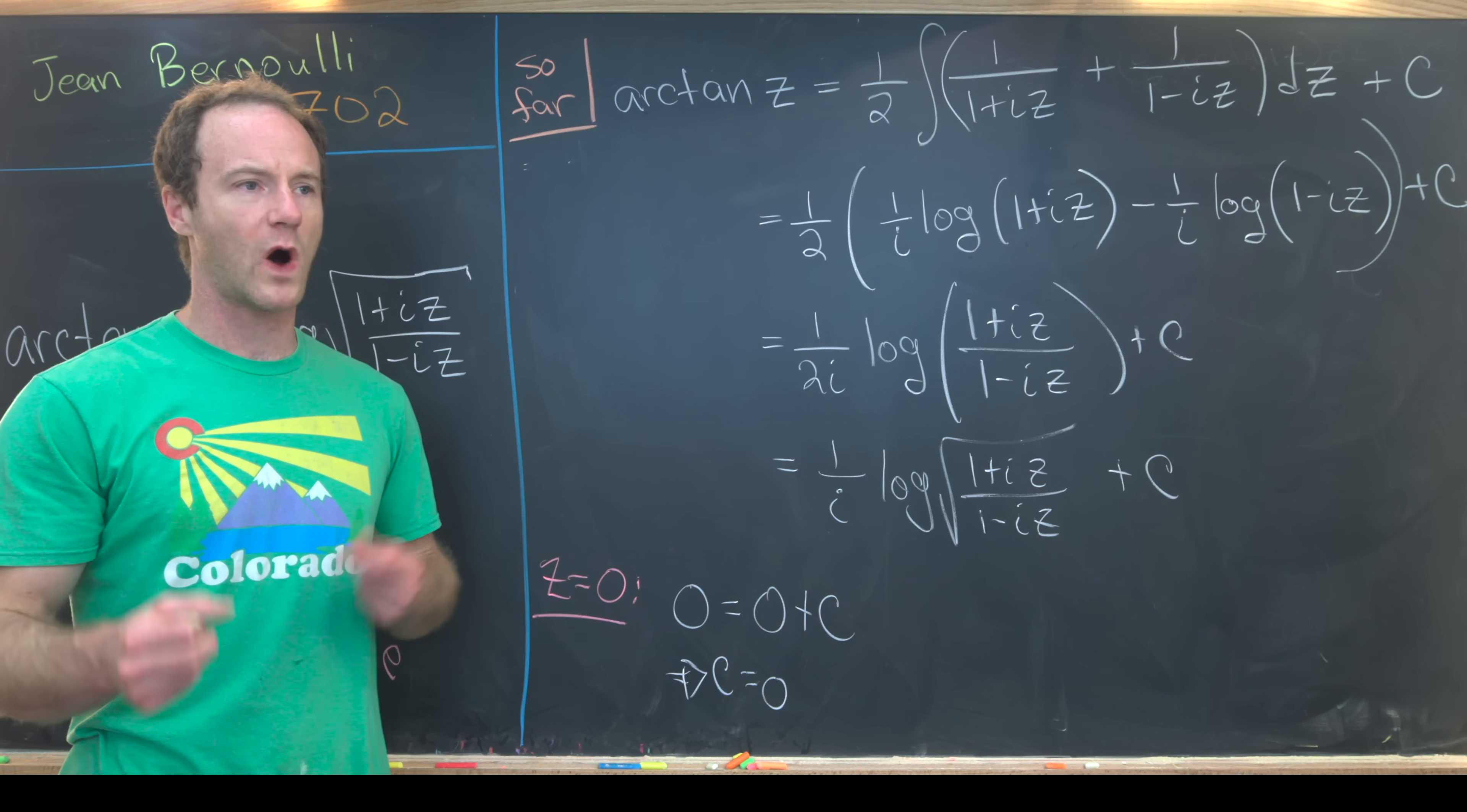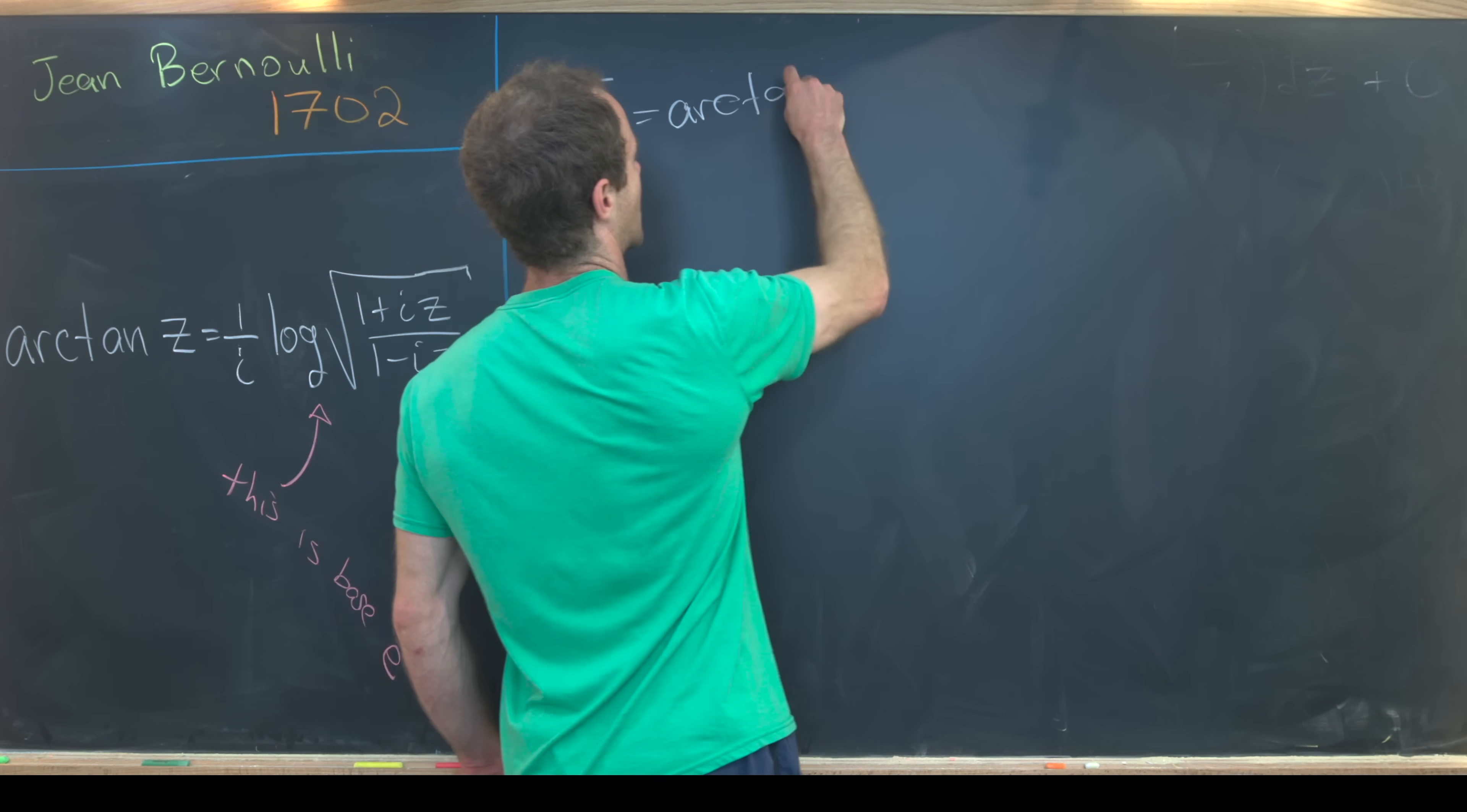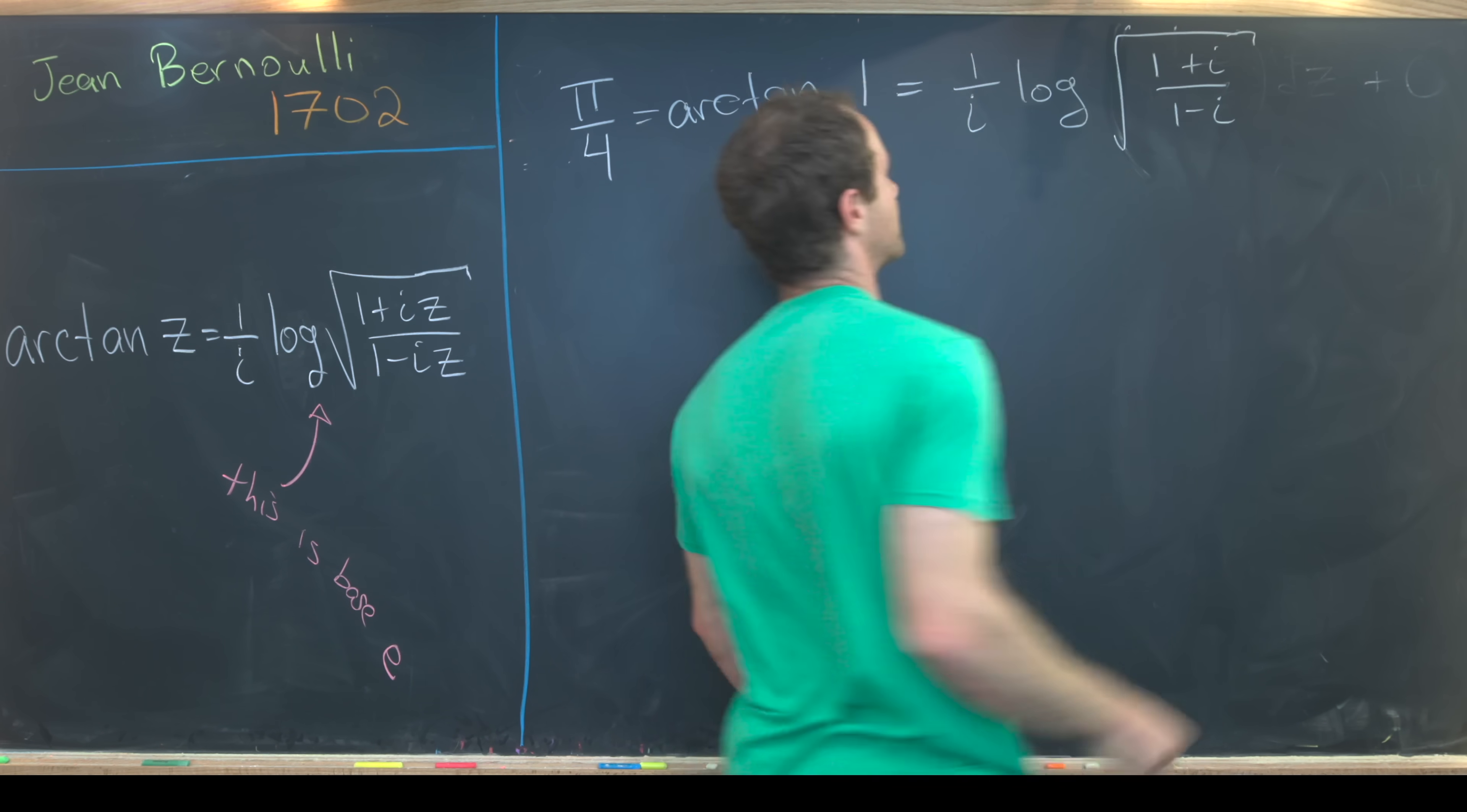Now I want to watch this identity work in practice just for fun. We just got done proving this identity. And now I just want to check it at some other value to give an idea for how it works. We know that the tangent of π/4 is one. So that means π/4 is the inverse tangent or the arctan of one. But that means it should also be equal to the logarithm with one plugged in for z. So that's one over i times the log of the square root of (one plus i) over (one minus i).